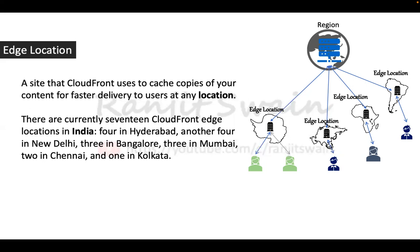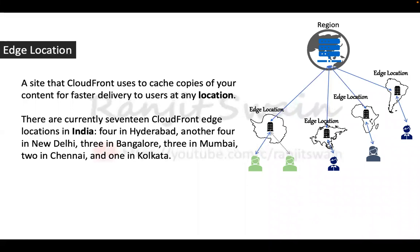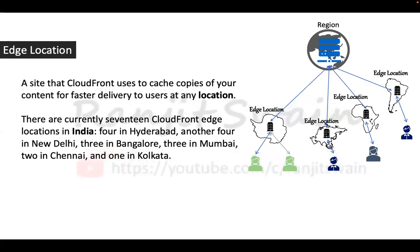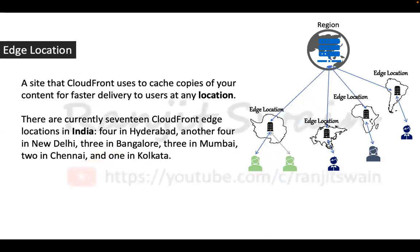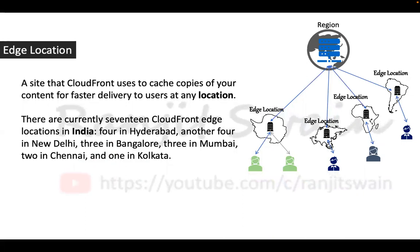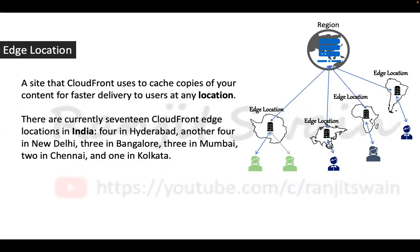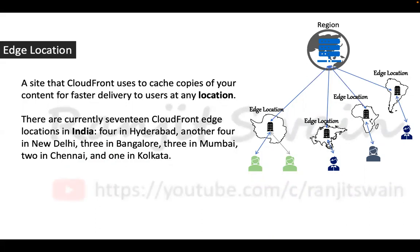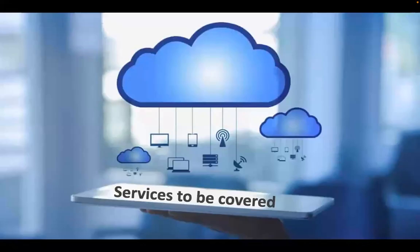Now you understand the importance of edge locations in AWS. These four key terms — edge location, data center, availability zone, and region — you're going to use throughout your entire cloud career. Keep them in mind, watch the video again, practice after class. I'll ask questions in the next class on these terms.